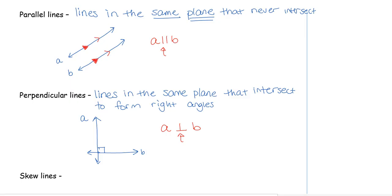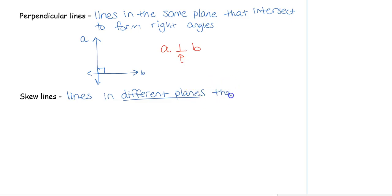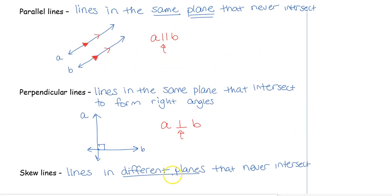The one you may not be as familiar with or have never heard about before are skew lines. Skew lines are lines in different planes that never intersect. They're very similar to parallel lines — the only difference is that parallel lines never intersect in the same plane, while skew lines never intersect in different planes. The diagram will look much different to show skew lines.